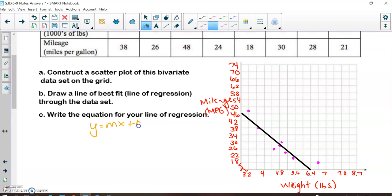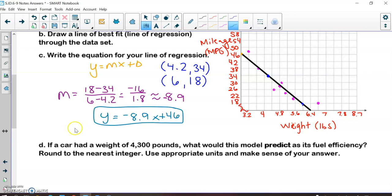So we're going to need to estimate our y-intercept because now we want to write the equation for our line of regression, which is y is equal to mx plus b. My y-intercept is about 46 here. Now I'm going to want to find the slope as well. So I'm going to need to pick two points in order to find the slope. So maybe a good point to pick would be this point here, which would be 4.2, 34. And then another good point to pick would maybe be this point here, which is 6, 18. So I'm going to have you find the equation by substituting or finding your slope.